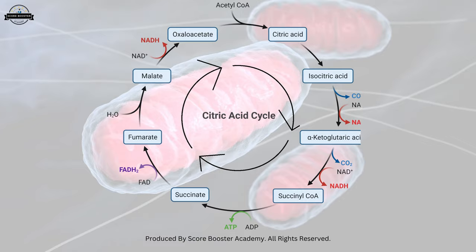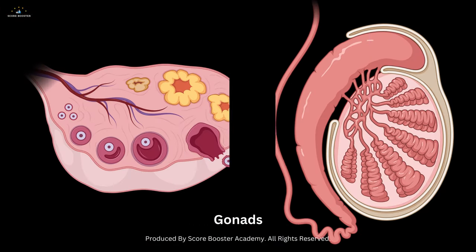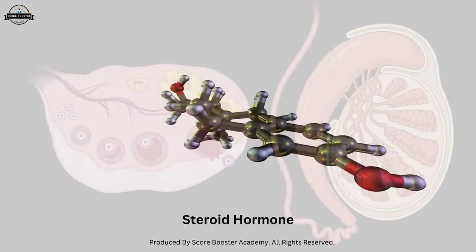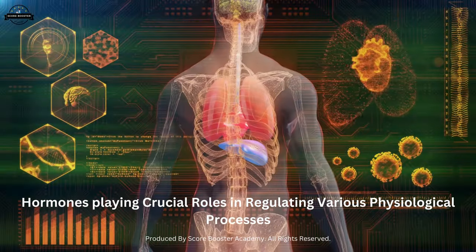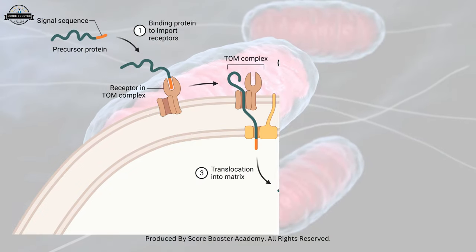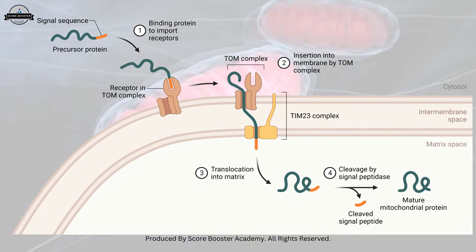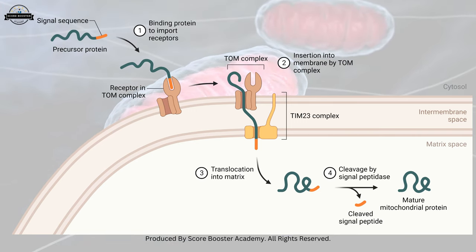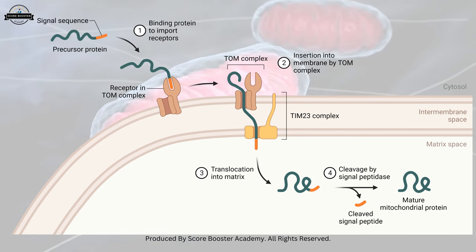Mitochondria in certain cells, such as those in the adrenal glands and gonads, are involved in the synthesis of steroid hormones. These hormones play crucial roles in regulating various physiological processes throughout the body. Mitochondria also contribute to cell signaling by releasing signaling molecules, including reactive oxygen species and calcium ions, which can communicate with other organelles and influence various cellular processes.